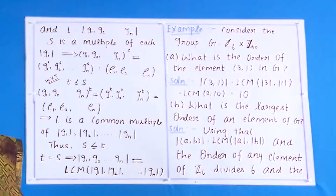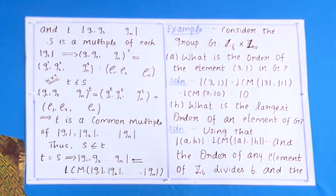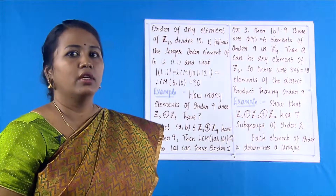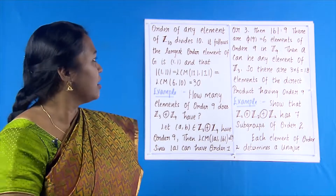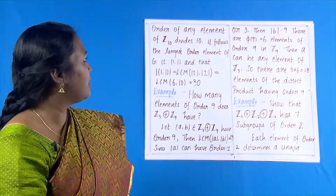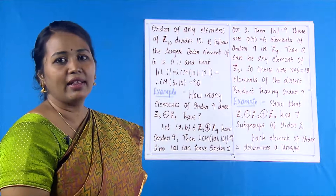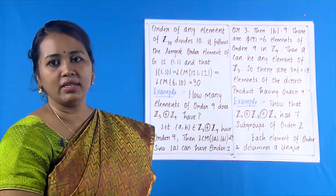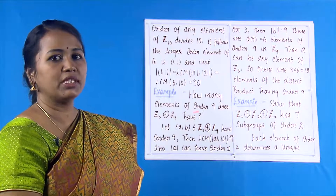Similarly, what is the largest order of an element of G? Using the theorem, the order of (a, b) equals the LCM of the order of a and the order of b. The order of any element of Z₆ divides 6, and the order of any element of Z₁₀ divides 10. It follows that the largest order in G corresponds to (1, 1), and the order of (1, 1) equals LCM(6, 10) = 30.